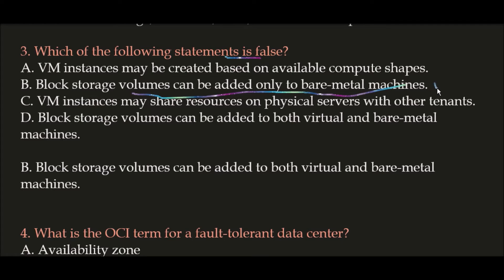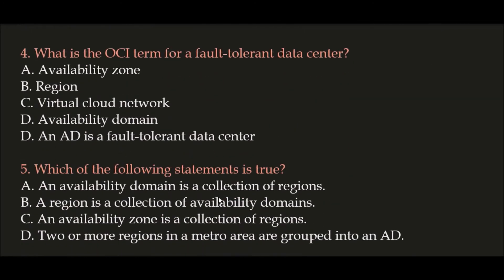Question 4: What is the OCI term for a fault-tolerant data center? Option A: Availability Zone, Option B: Region, Option C: Virtual Cloud Network, Option D: Availability Domain. The correct answer is Option D, Availability Domain. An availability domain is a fault-tolerant data center and is the OCI (Oracle Cloud Infrastructure) term for it.